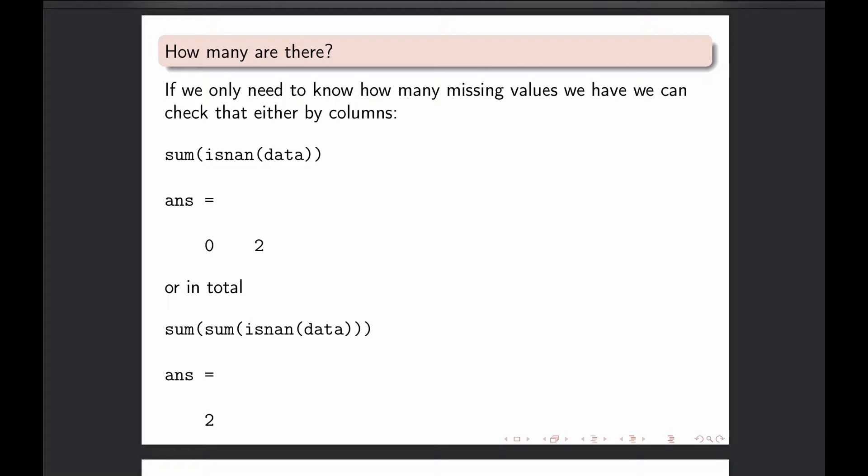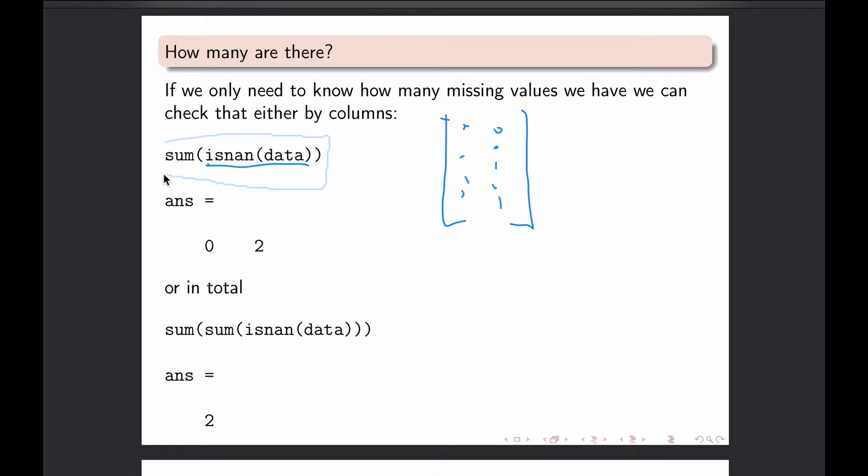So for instance, if we had again that data with two columns, doing isNAN was giving you that bunch of zeros and ones, and there were some two ones somewhere. So if you think of it, when you apply SUM on that, that one, SUM, remember, originally works on columns, so this way.